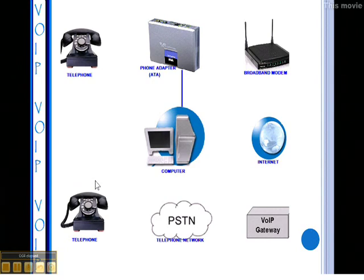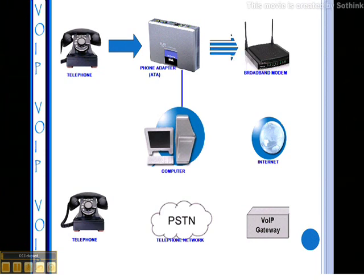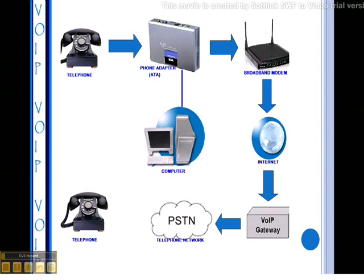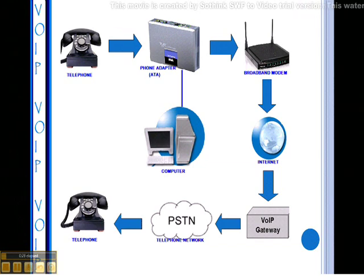First, voice is converted by an ATA from an analog signal to a digital signal. It is then sent over the Internet to a location that will be close to the destination. Then it will be converted back to an analog signal for the remaining distance over the traditional circuit switch. Your call can be received by traditional telephones worldwide, as well as other VoIP users.